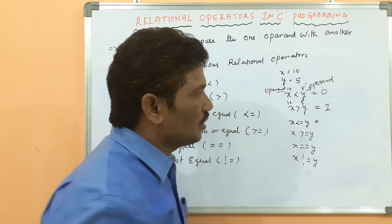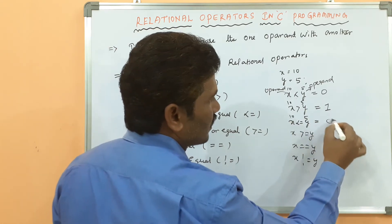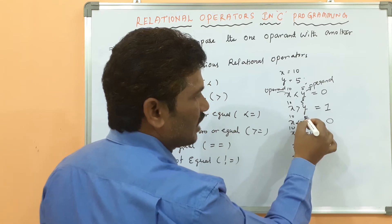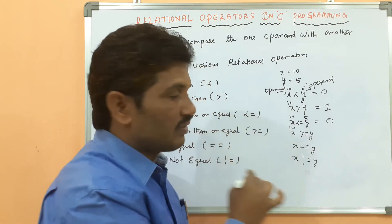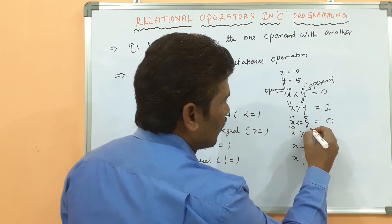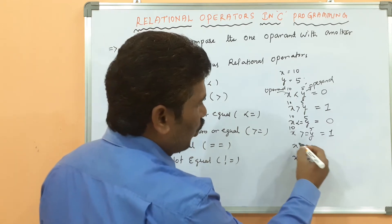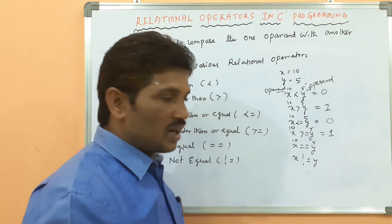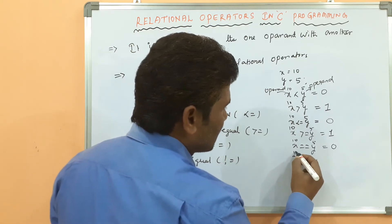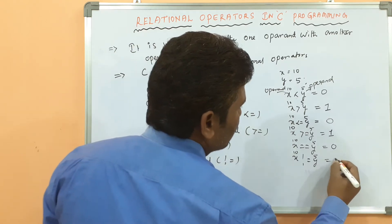For x less than or equal to y: x is 10, y is 5, so 10 less than or equal to 5 is false — returns 0. For x greater than or equal to y: if y value were also 10 the condition would be true, but y is 5, so condition is false. For x greater than or equal to 5 with x=10, condition is true — returns 1. For x equal to y: x is 10, y is 5, both are not equal — returns 0. For x not equal to y: 10 not equal to 5 is obviously true — returns 1.